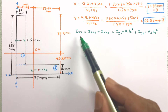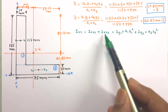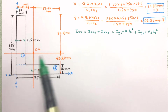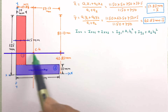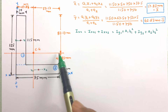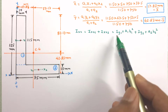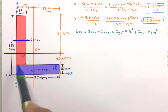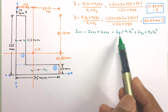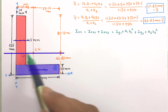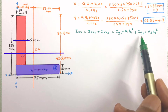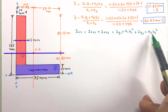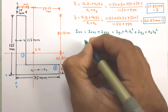Ixx equals Ixx1 plus Ixx2, where Ixx1 is the moment of inertia of the first figure about the centroidal axis of the complete figure, and Ixx2 is the same for the second figure. Using the parallel axis theorem: Ixx1 = Ig1 + A1·h1², where Ig1 is the moment of inertia of the first figure about its own centroidal axis. Similarly, Ig2 plus A2·h2² transfers the second figure's contribution.